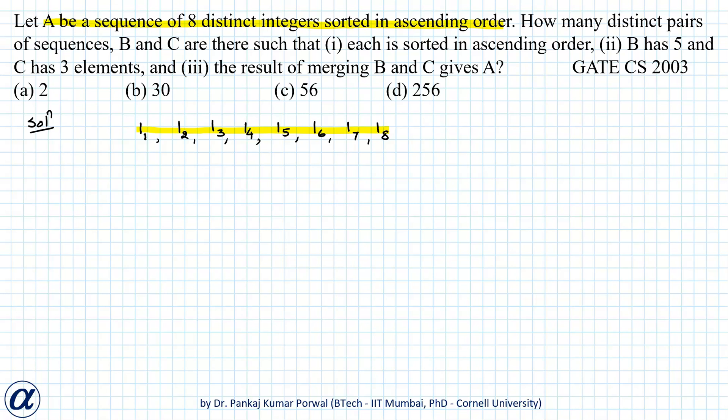Then we want to find how many distinct pairs of sequences B and C are there such that each is sorted in ascending order. B has five and C has three elements, and the result of merging B and C gives A.